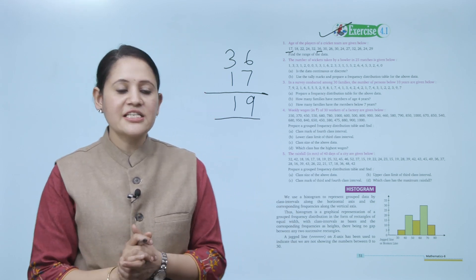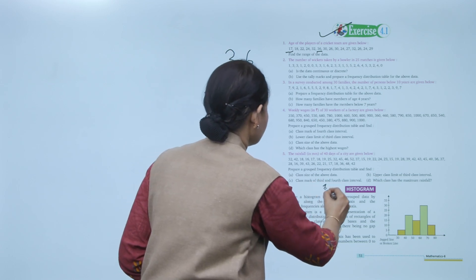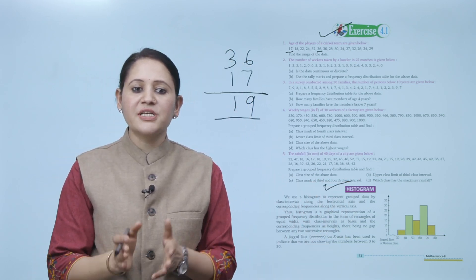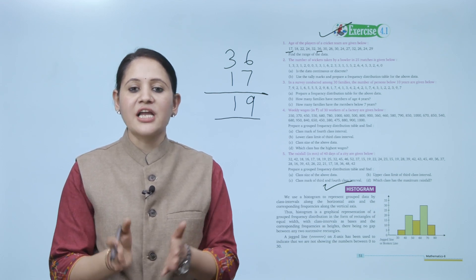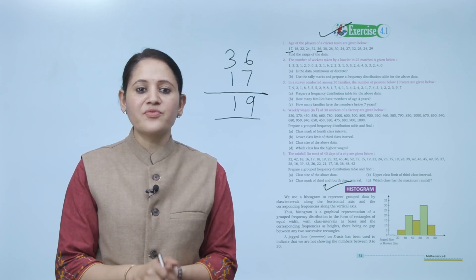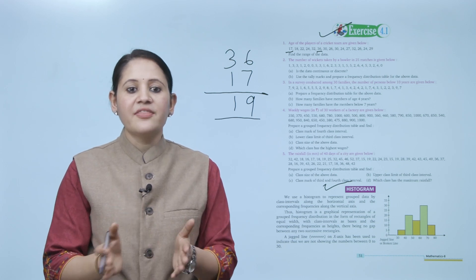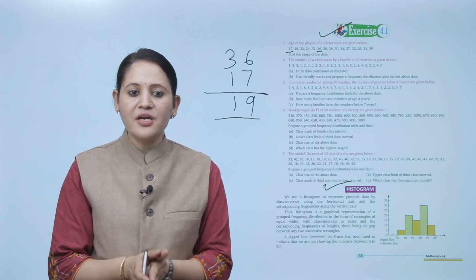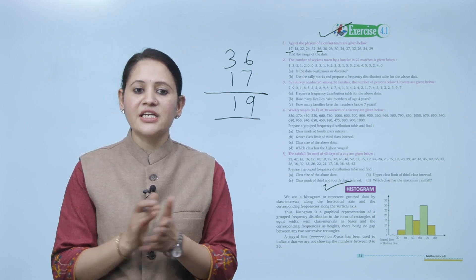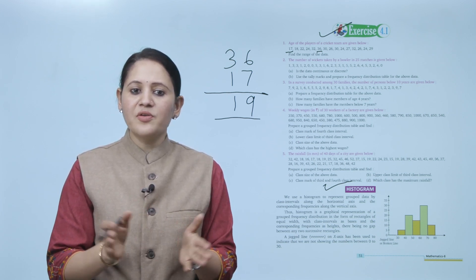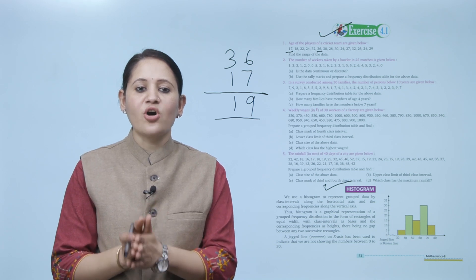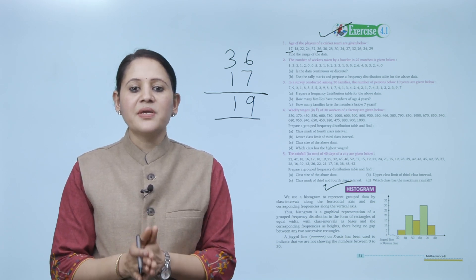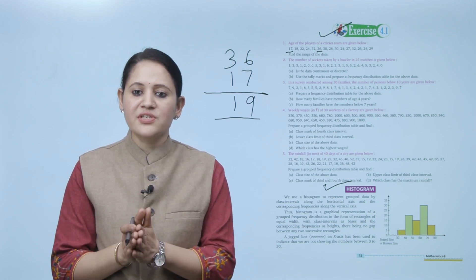Next is histogram. We use a histogram to represent grouped data with class intervals along the horizontal axis and corresponding frequencies along the vertical axis. A histogram is the graphical representation of grouped frequency distribution in the form of rectangles of equal width, with class intervals as the base and frequency as height, with no gap between any two successive rectangles.